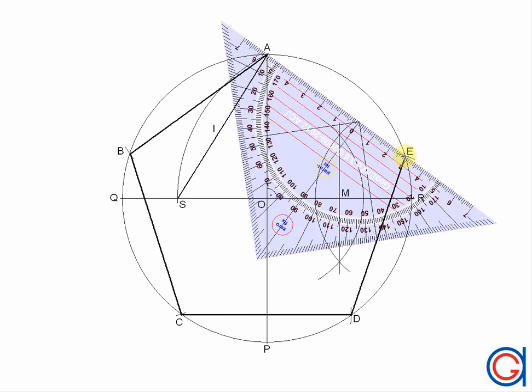And finally, so now we have our regular pentagon inscribed in a given circumference, joining our last vertices E to A.